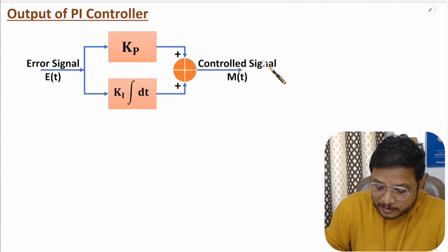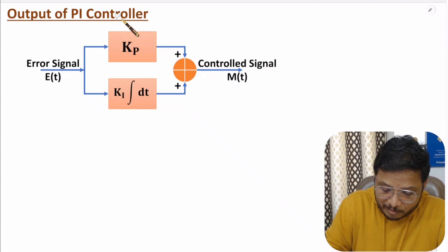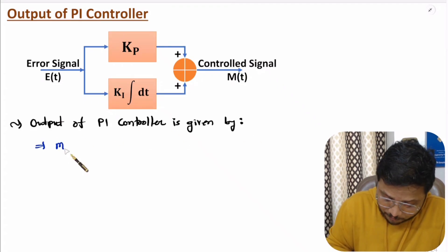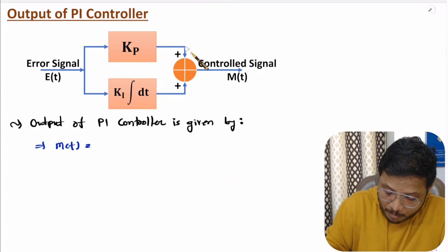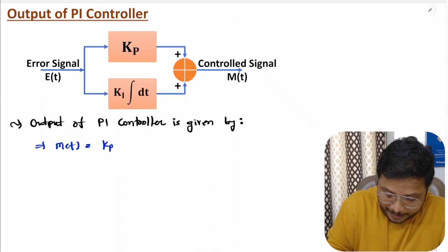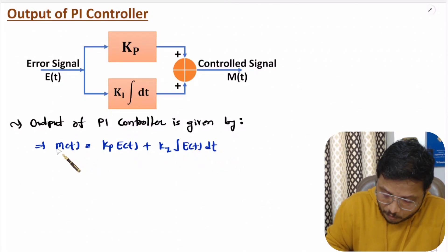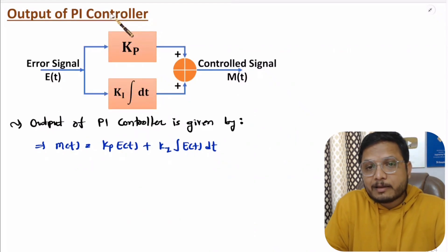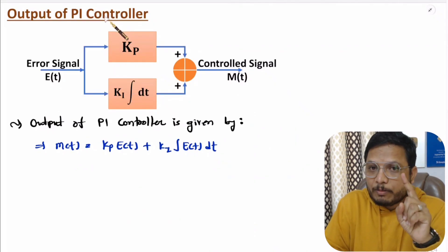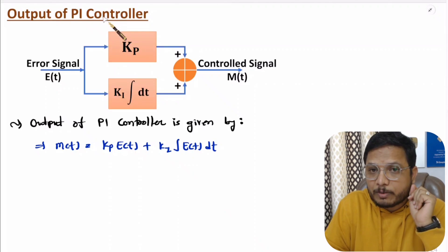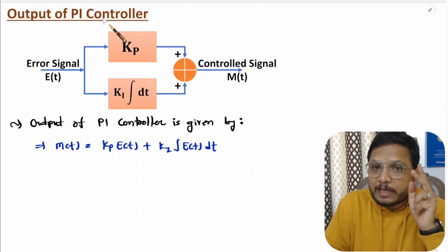The output of the PI controller is M(t), which is the algebraic sum of proportional and integral controller outputs. Proportional controller output is Kp into E(t), and integral controller output is Ki into the integration of E(t) dt. This is the output of the PI controller in the time domain. To get the transfer function we need to convert this to the frequency domain by applying the Laplace transform.